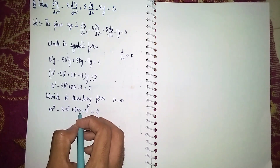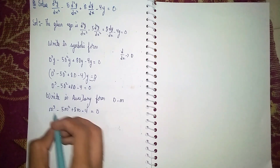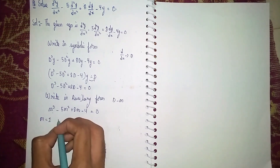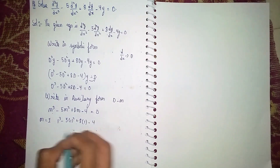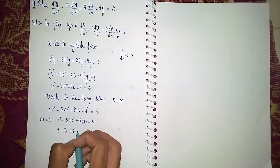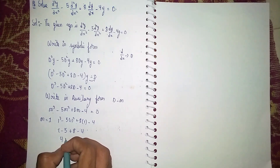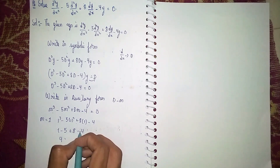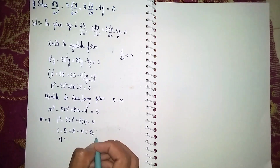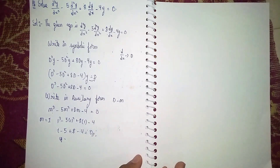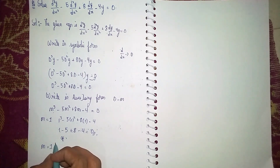I can't find the factors directly, so I am using the synthetic division method. I try m = 1: 1³ minus 5 times 1² plus 8 times 1 minus 4 gives 1 minus 5 plus 8 minus 4, which equals 0. So m = 1 is a root.